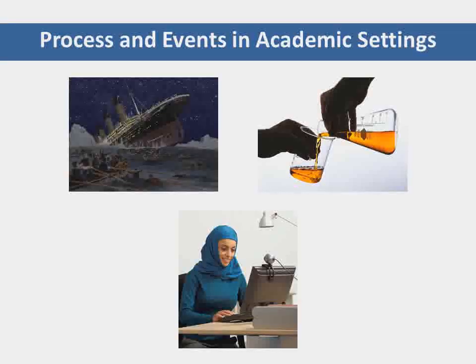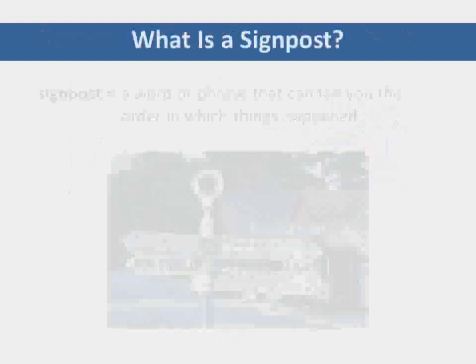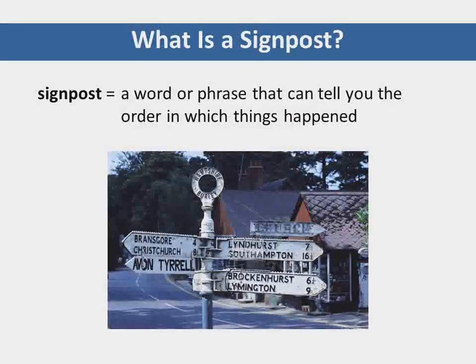In order to successfully follow a series of steps in a process, or the order of events in a story or historical context, it's important to listen for signposts. What is a signpost? A signpost is a word or phrase that can tell you the order in which things happened. There are signposts that signal each of the main phases in a process or sequence of events — that is, the beginning, the middle, and the end.